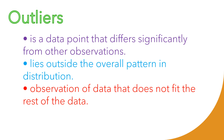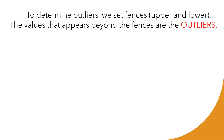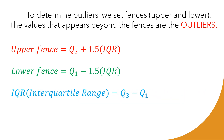But how do we determine the outliers? To determine the outliers, we set fences — the upper fence and the lower fence. The values that appear beyond the fences are called outliers. To set the upper fence, we need the value of Q3 plus 1.5 times IQR. To have the lower fence, we need Q1 minus 1.5 times IQR. IQR simply means the interquartile range, and to obtain it, we need Q3 minus Q1.